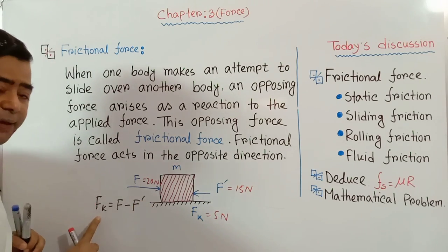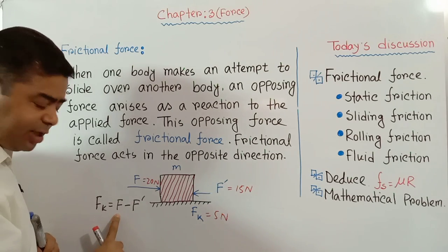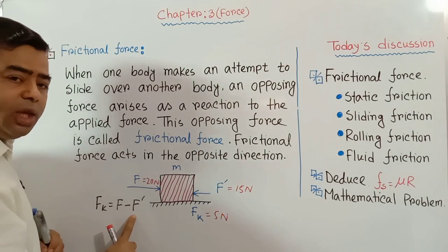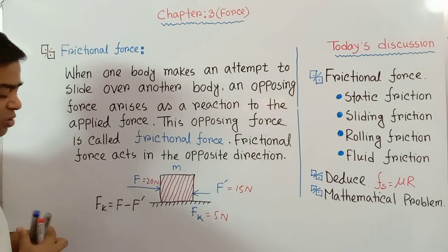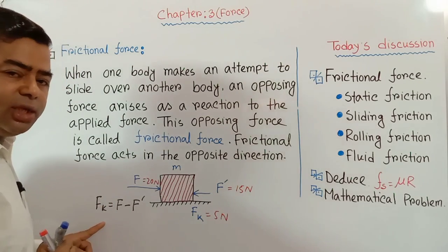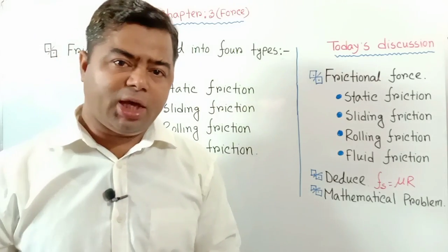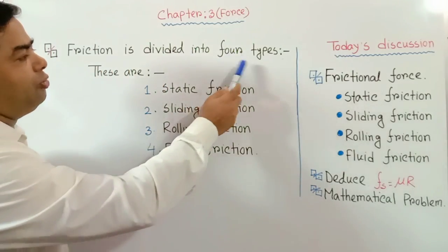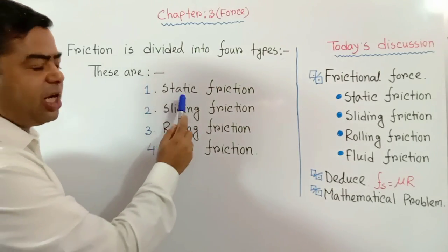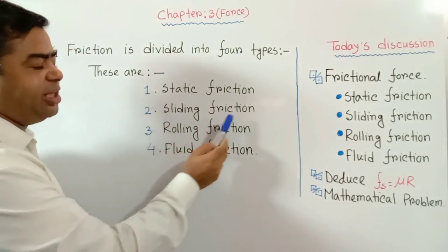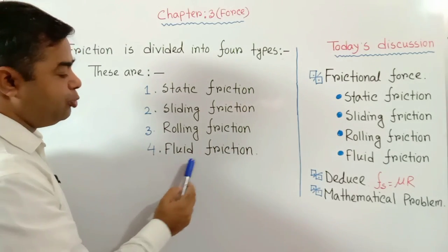Here Fk is frictional force, F is applied force, and F prime is effective force. We use this equation to calculate frictional force. Friction is divided into four types: static friction, sliding friction, rolling friction, and fluid friction.